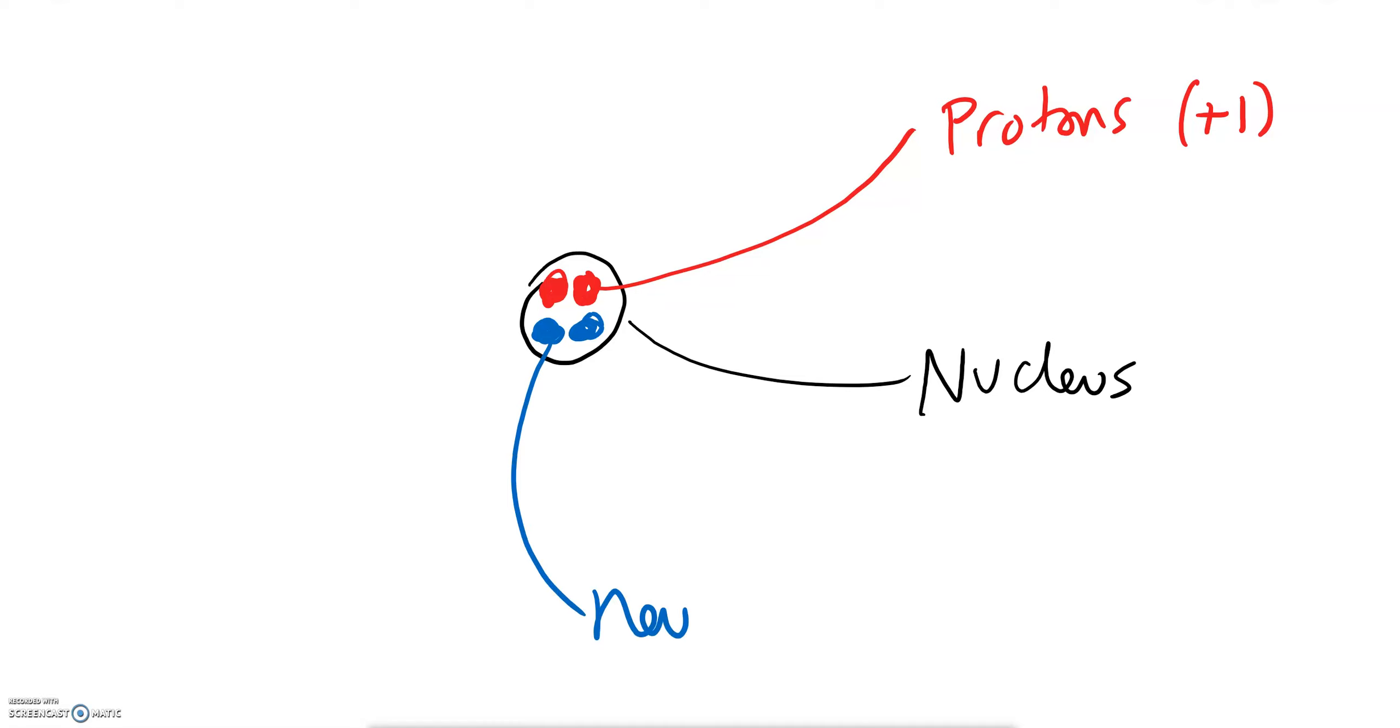And this is called the neutron. The name sounds like neutral so that makes it nice and easy. This has no charge, zero, or you can write neutral. Now whizzing around on the outside, remember the scale - this is nowhere near scale. The electron would be miles and miles away from this if this was to scale but because we don't have so much paper I'm just going to draw it here. So remember this is not to scale. Here's the electron.